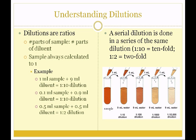A serial dilution is done in a series of the same dilution. We'll be doing a tenfold dilution in lab — a series of 1:10 dilutions, each one made from the previous. Starting with one milliliter of sample added to nine milliliters of water gives a 1:10 dilution. Taking one milliliter from that into the next tube of nine milliliters of water gives a 1:100. We'll carry this out most likely to a 1:100,000 dilution.